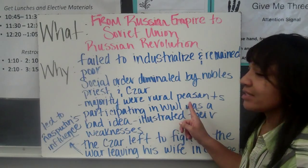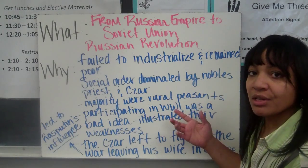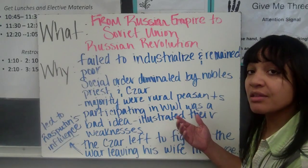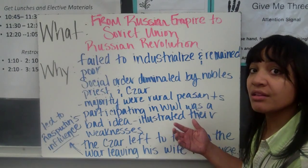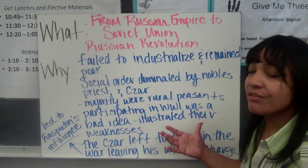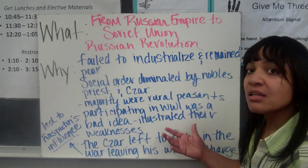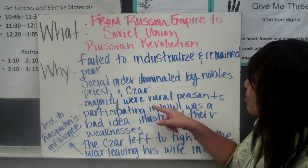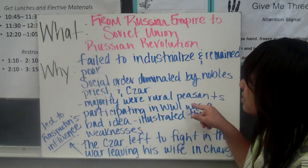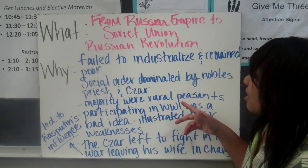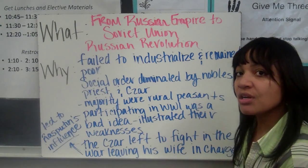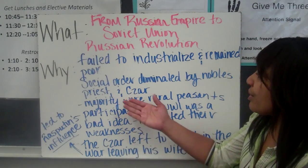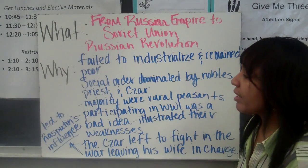The majority were rural peasants, and this is similar to what we saw in the Latin Revolution and the French Revolution, where the majority of the class did not receive fair treatment. The majority were rural peasants that didn't have a lot of money — they were struggling, they were poor — while the nobles, the priests, and the Tsar were living really well.